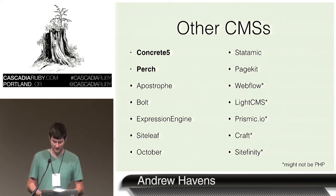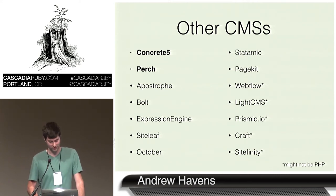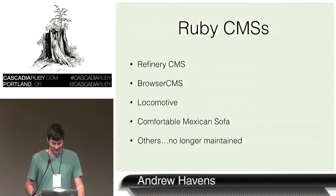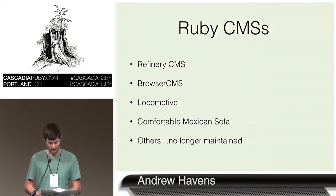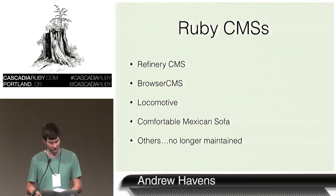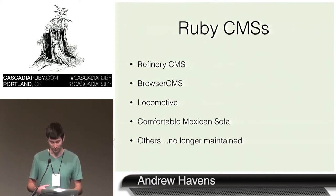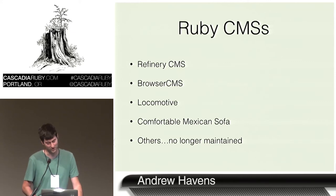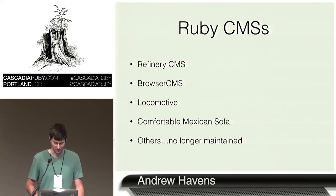Many of these PHP CMSs are coming up with innovative approaches to managing content, and the downside is they're written in PHP. In Ruby, we basically have four CMSs. I limited this search to the top most popular Ruby CMSs listed on Ruby Toolbox that seem to be actively maintained: Refinery CMS, Browser CMS, Locomotive, and Comfortable Mexican Sofa — which is an acronym for CMS.